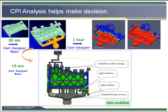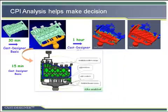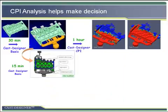We added an overflow to the right inner gate and removed the overflow from the left side and right side. Then we re-ran it in Cast Designer CPI.